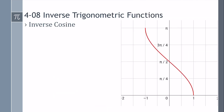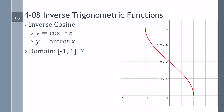Inverse cosine. Here I've given you the graph of inverse cosine. Again, it's just a portion of the whole thing so that it's a function. It can be written as cosine to the negative 1, or arc cosine. The domain, the x's, go from negative 1 to positive 1. The range, the y's, go from 0 to pi. If you look at the unit circle, that's quadrants 1 and 2. So inverse cosine always gives you an angle in quadrant 1 or 2.